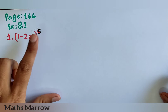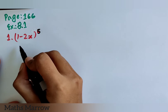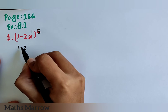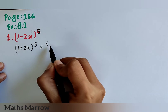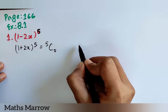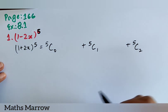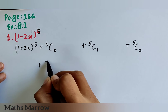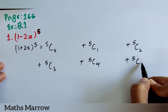Here, the power is 5. If you have a question like (1 - 2x)^5, I will tell you how to solve this. We will start with the combinations: 5C0, plus 5C1, plus 5C2, plus 5C3, plus 5C4, plus 5C5.